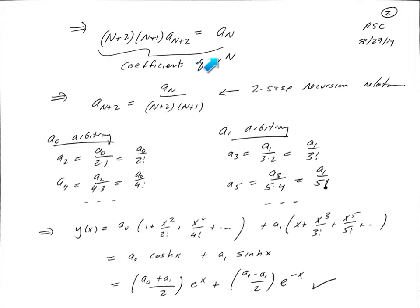That equation becomes this equation here, capital N plus 2 times capital N plus 1, a_{n+2} equals aₙ. That's imposing equality of the coefficients of the power x to the capital N. This gives us a relationship between the different terms in our Taylor expansion. a_{n+2} is equal to aₙ over (n+2) times (n+1). This is known as a two-step recursion relation.